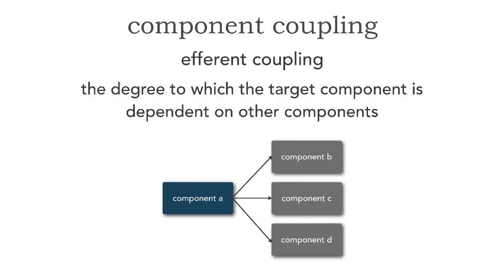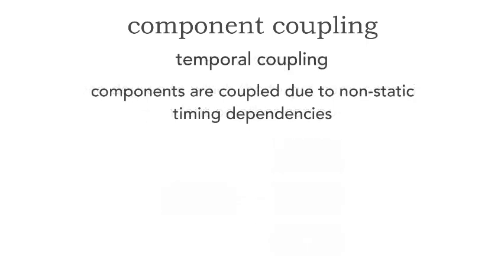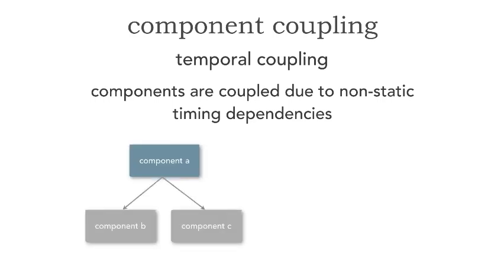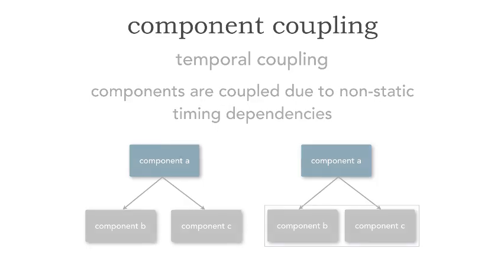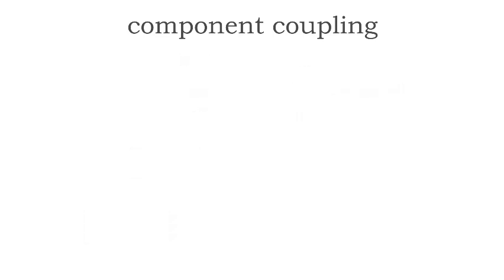Now, those are two forms of static levels of coupling. However, there's another type of coupling called temporal coupling. This is the fact that components or services are coupled due to non-static timing dependencies. For example, I've got two examples here where component B and C — notice there is no static coupling whatsoever between them. However, in the left-hand example, component B and C must be used in some sort of orchestration where B must be called before C. Or in the case of the right-hand side, B and C are both involved in a transactional unit of work that must be completed in a single logical unit of work, or LUW. In that case, B and C are temporally coupled.